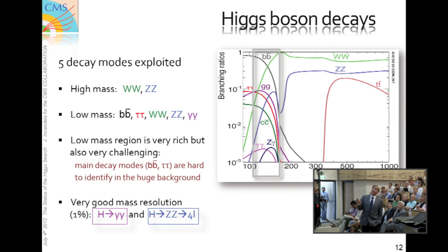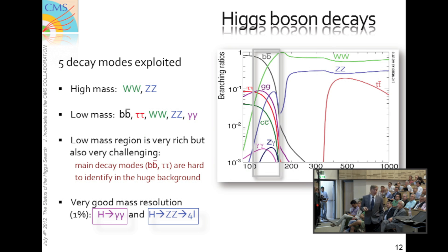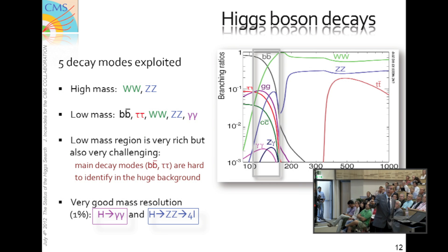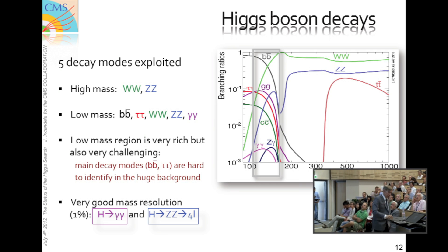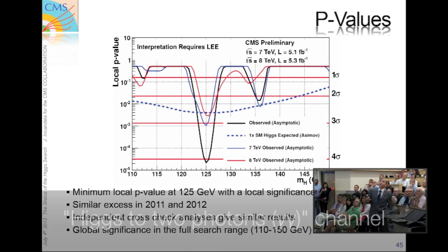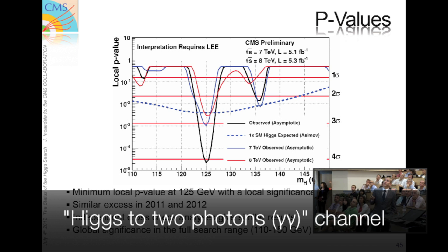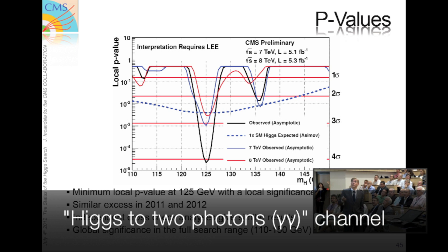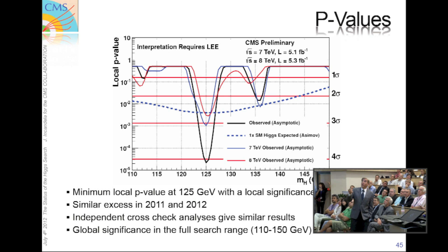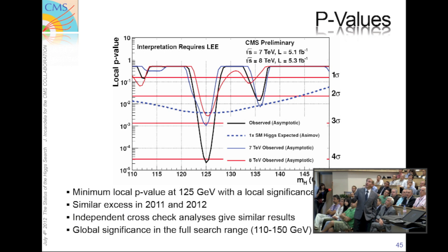So for the low-mass searches, which I'll concentrate on today, we look for BB-bar, tau-tau, WW, ZZ, and two photons. We get very good mass resolution in these two channels. What you see here is now the P values — this is the probability that the background could fluctuate to this extent. And you see, combining the two years, we're beyond four sigma, about 4.1 standard deviations.